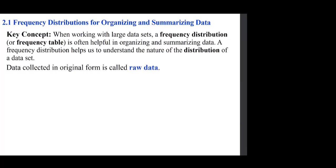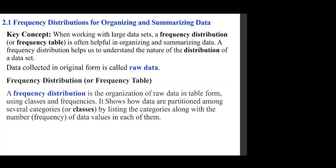First we start with what's called raw data — whatever we collect, such as weights, is raw data. A frequency distribution, or frequency table, is the organization of raw data in table form using classes and frequencies. It shows how data are partitioned among several categories or classes by listing the categories along with the number of data values in each.